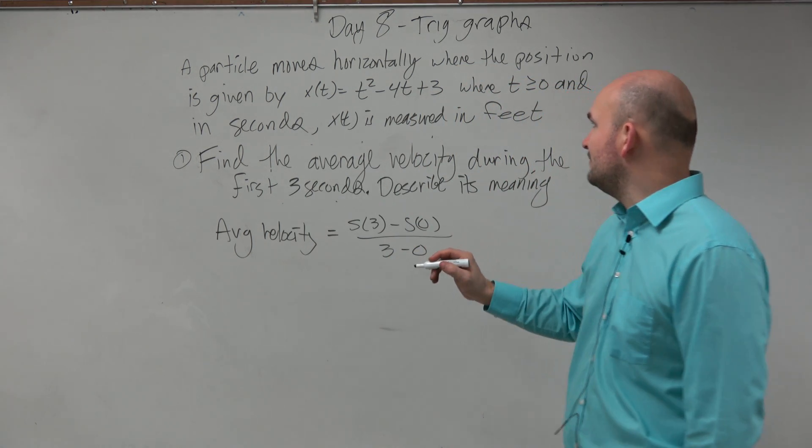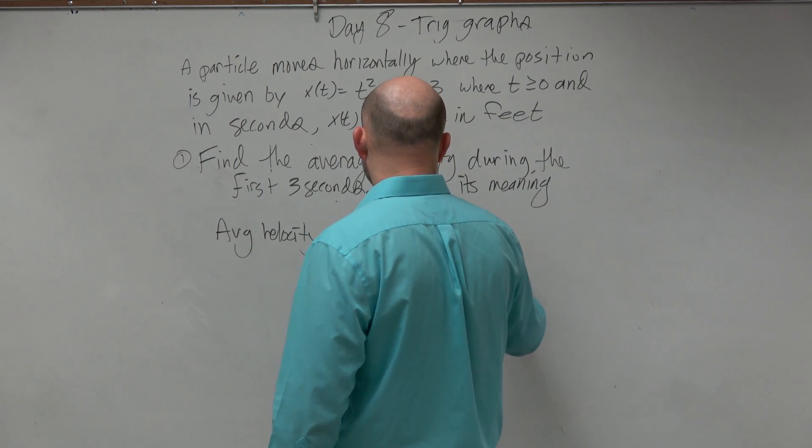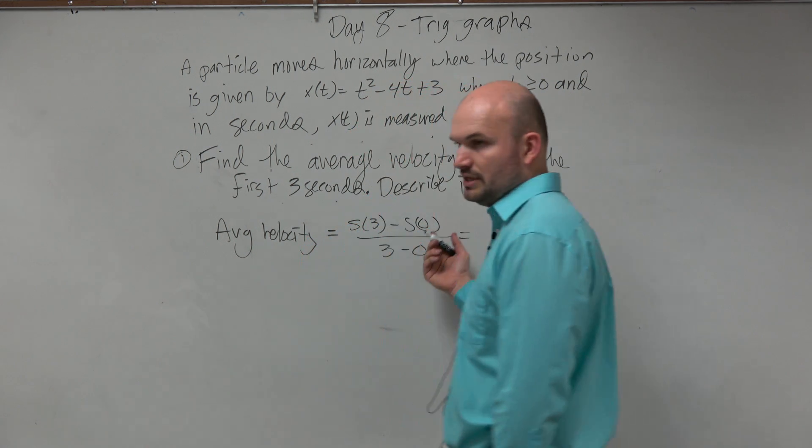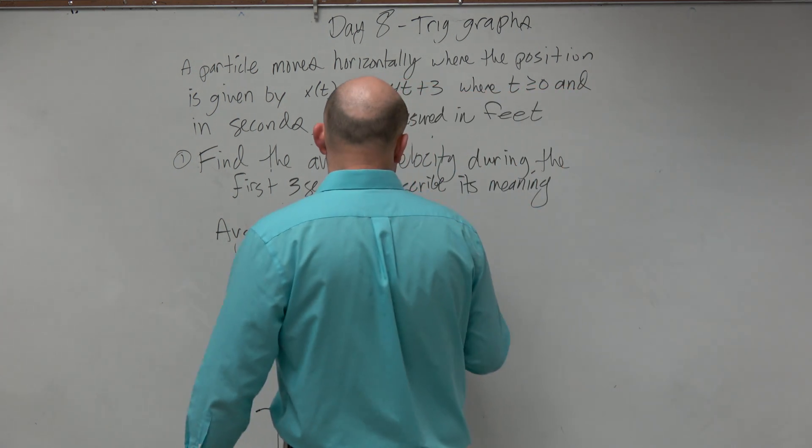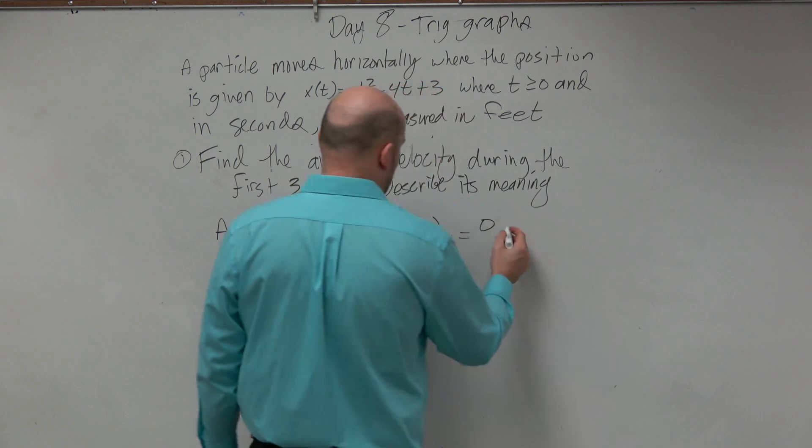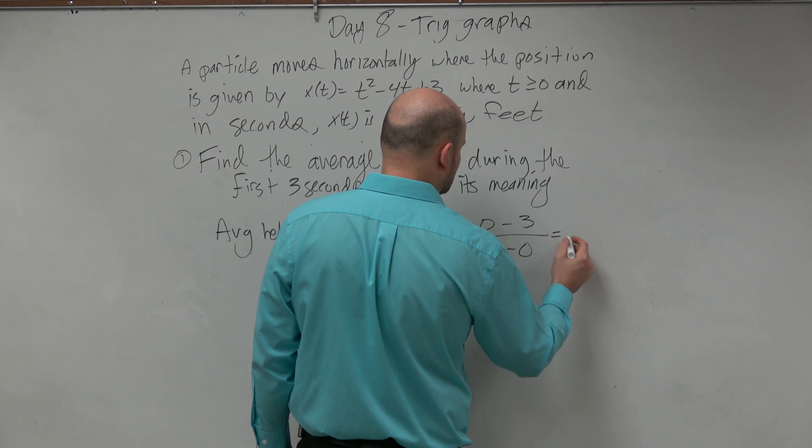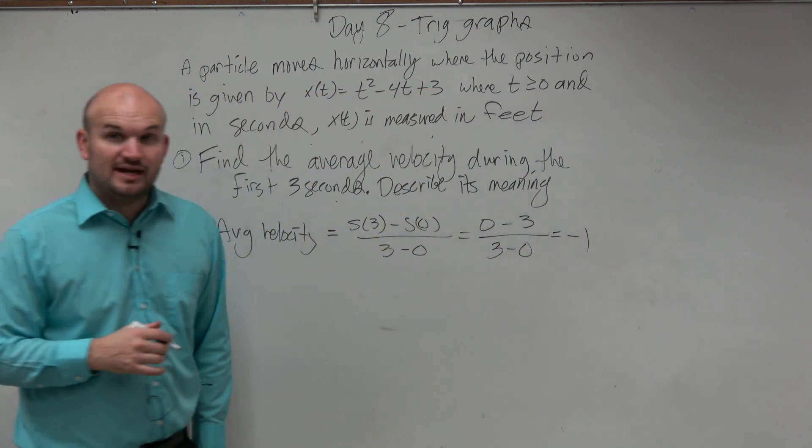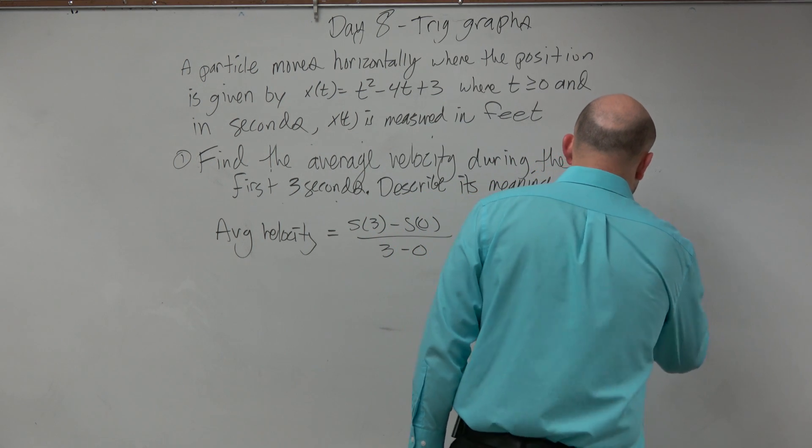So s of 3 is ending up giving you—what was that? 3? No, negative 1? Yeah, what was s of 3? 0 minus 0... 0. And then, oh, it's minus 3. Then we have negative 1, and we do have this in context. That's feet per second.